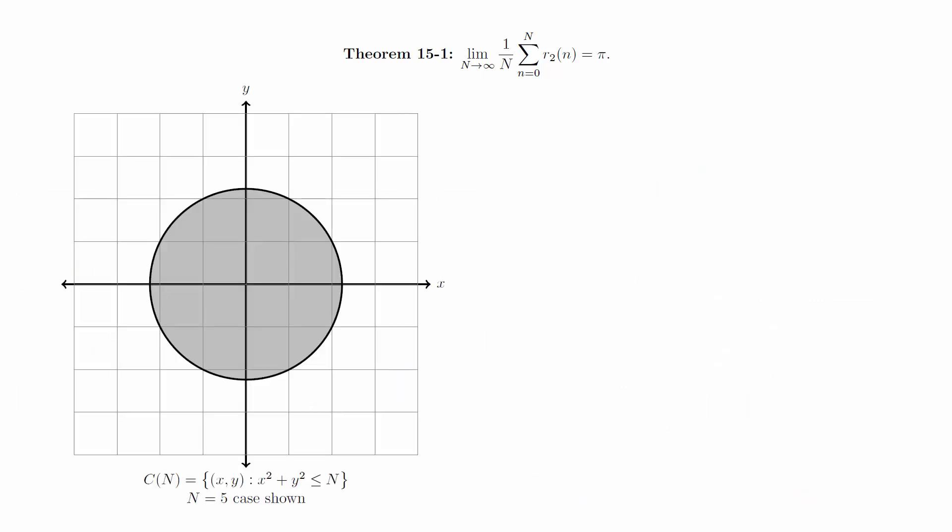To begin the proof, we will let c(n) denote the set of points satisfying x squared plus y squared is less than or equal to n. In other words, it's the set of points in the plane on or inside the circle of radius square root of n. Clearly, this sum is the number of lattice points in c(n). In other words, the challenge is to determine how many lattice points there are in a circle of radius square root of n.